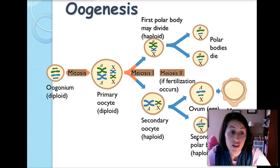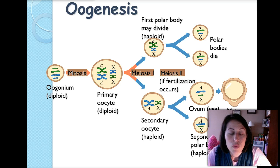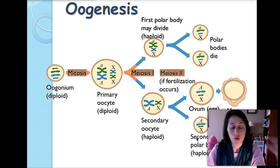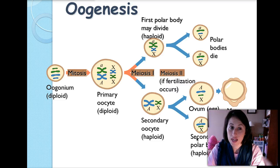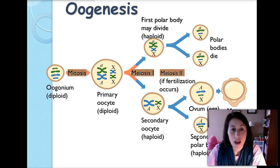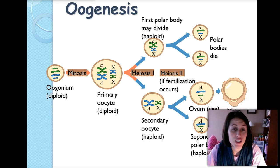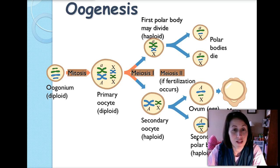There's one more video left for this unit talking more specifically about genetic variation. The key takeaways from meiosis are that you get four non-identical haploid cells, and one major thing that happens in prophase one is crossing over — make sure you understand what that is. If you have any questions, write them down and we'll go over them in class.